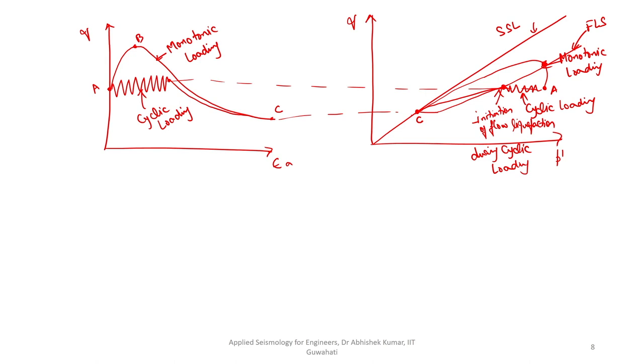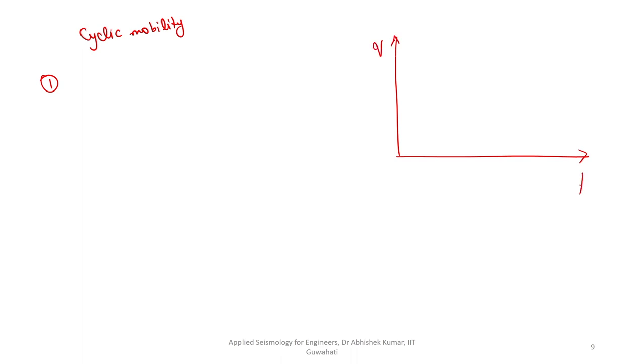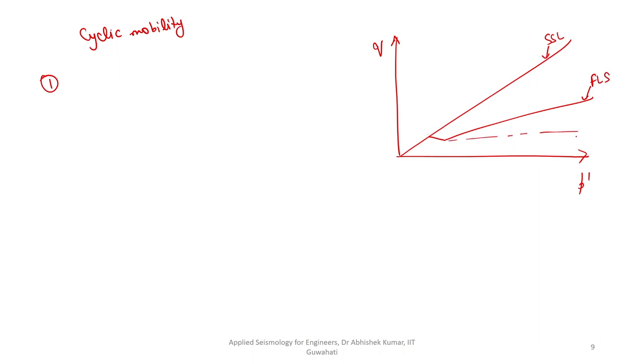As far as cyclic mobility is concerned, we can discuss three cases. In cyclic mobility, the sample may or may not undergo flow liquefaction but can experience cyclic mobility. On the Q versus P prime plot, with the steady state line and flow liquefaction surface shown, the potential zone for cyclic mobility includes all samples described by state of stress in zones below the FLS. The initiation point of cyclic mobility is not as well identified as in the case of flow liquefaction. Three possible combinations exist.